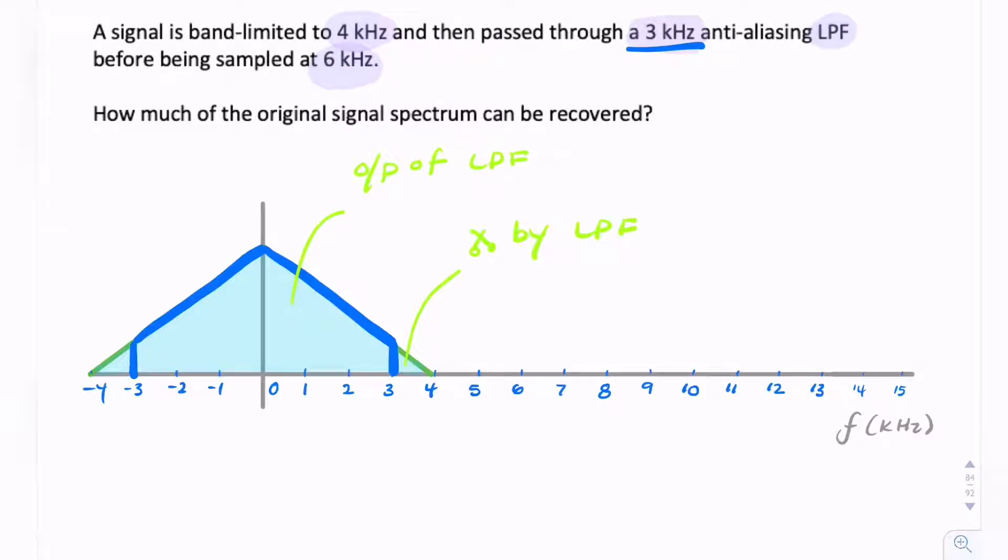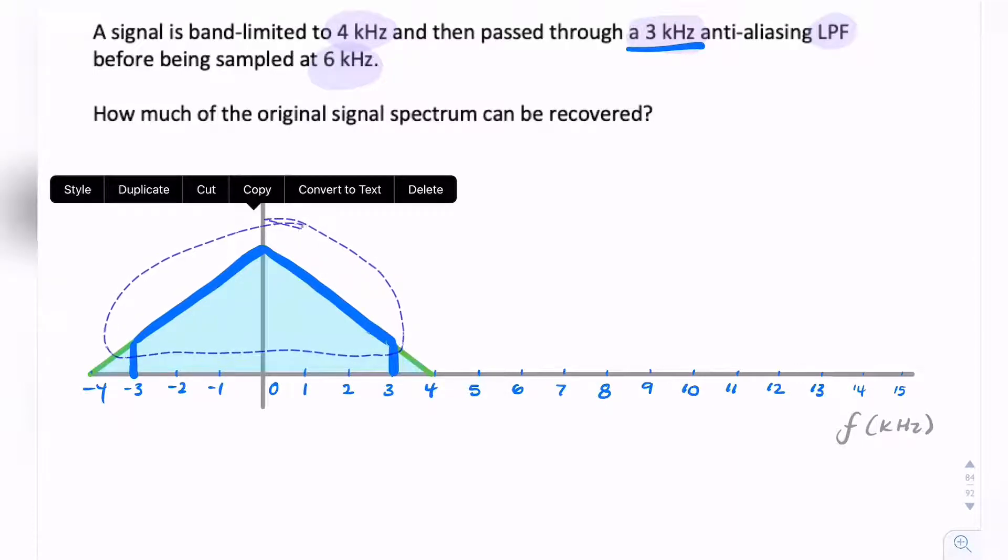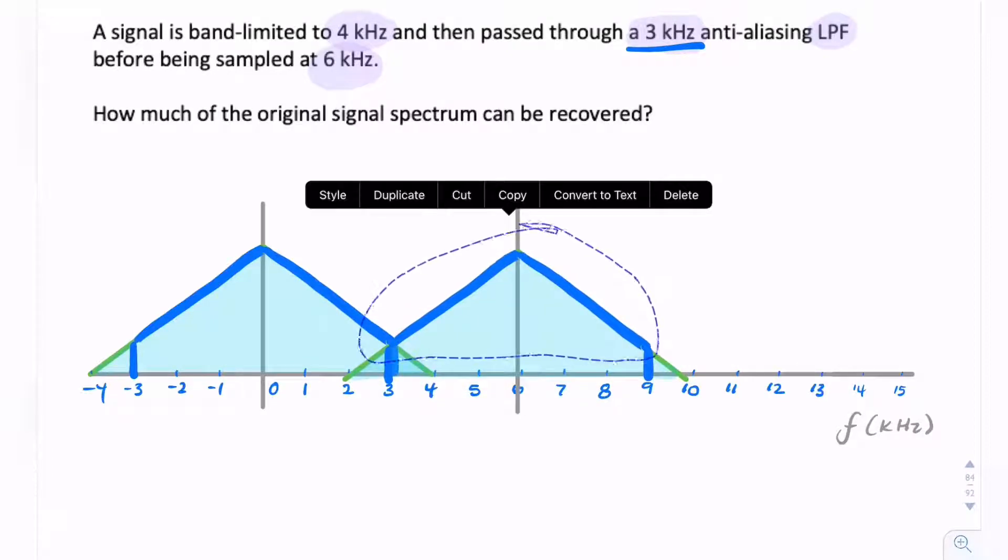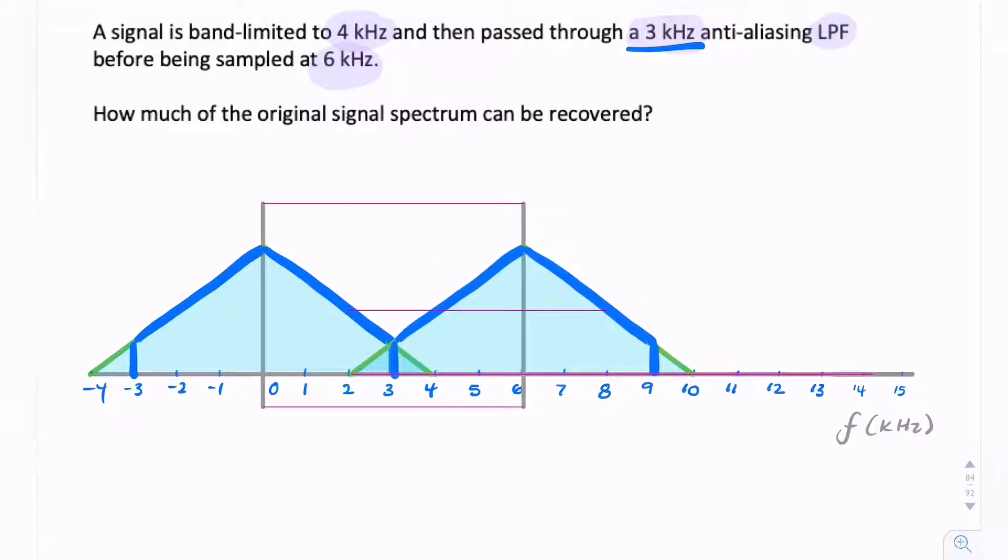When we sample, we need to create replicas of this signal. I'll duplicate that. Our replicas sit at multiples of the sample rate, so the sample rate is 6 kHz.